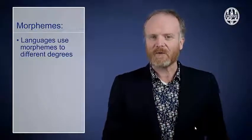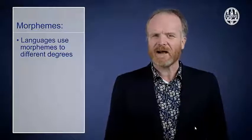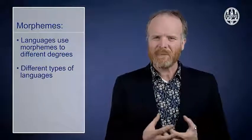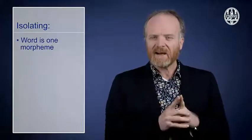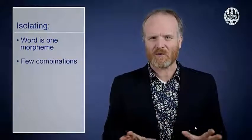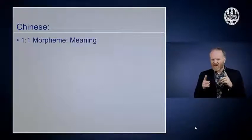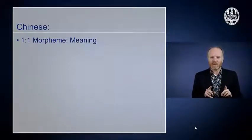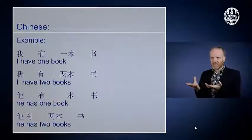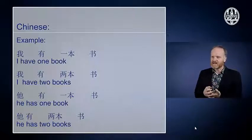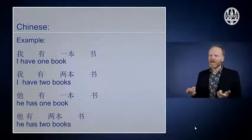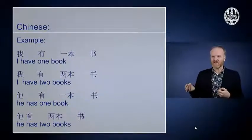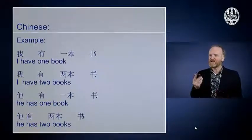Different languages use morphemes, the system of putting morphemes together to different degrees. And that turns out to be very useful for classifying languages. There are different types of languages. The first type is called isolating. In isolating languages, most words are exactly one morpheme. And there are very few or no combinations of morphemes to make words. A well-known example of this is Chinese. In Chinese, there's a one-to-one, almost a one-to-one relationship between morpheme and meaning. Here you see an example of four Chinese sentences. And what you can see is that between I have one book and I have two books, two things change in English. One changes into two and book changes into books. But in Chinese, only one thing changes.